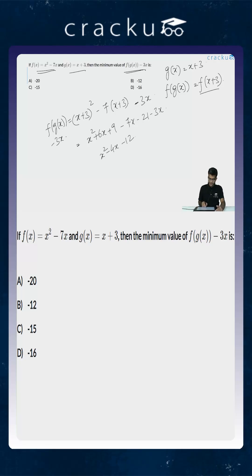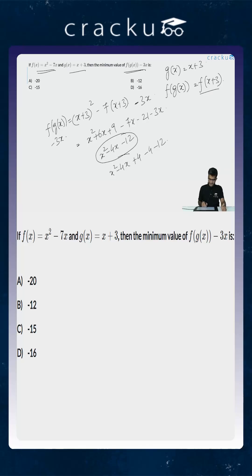We are trying to find the minimum value of this expression. To do so, let us complete a perfect square. This gives us x squared minus 4x plus 4 minus 4 minus 12. We have added and subtracted 4, because x squared minus 4x plus 4 is equal to x minus 2 whole squared. So the expression becomes x minus 2 whole squared minus 16.